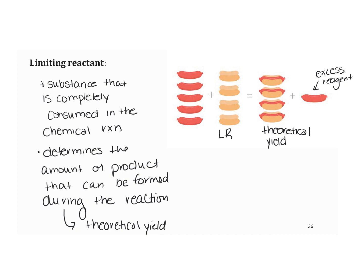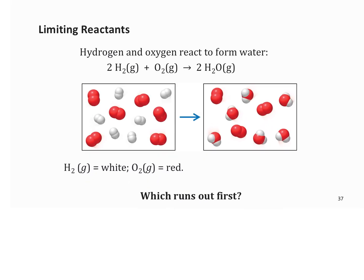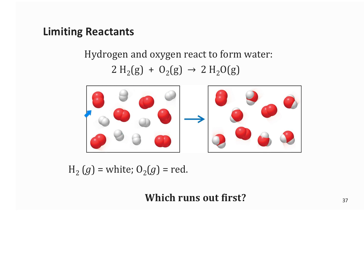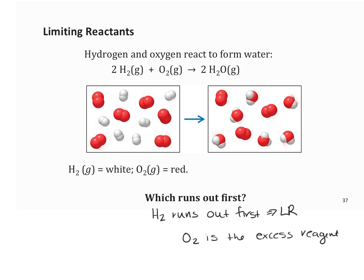Now let's use chemicals. Hydrogen and oxygen react to form water. The oxygen is shown in red and the hydrogen in white. We're trying to identify what runs out first. All of the hydrogen has reacted and there's excess oxygen left, so hydrogen runs out first — it's the limiting reactant. Oxygen is the excess reagent because it's left over.